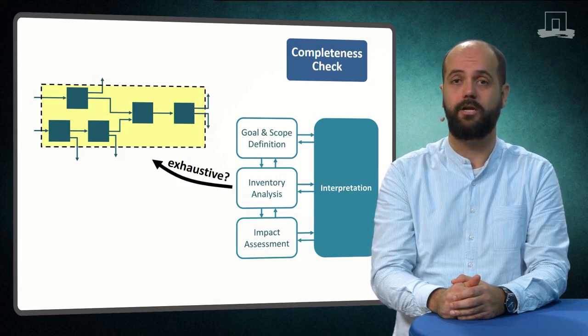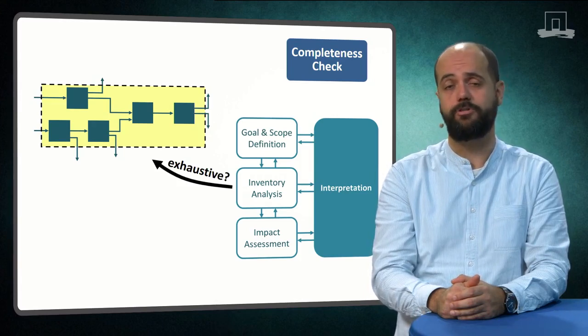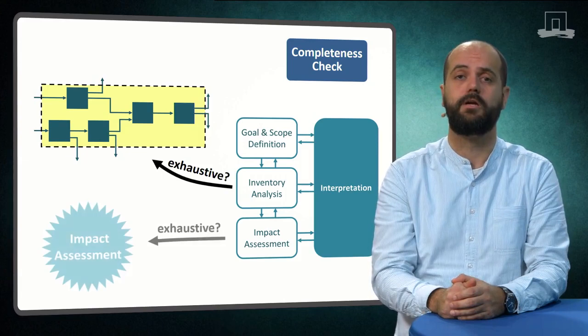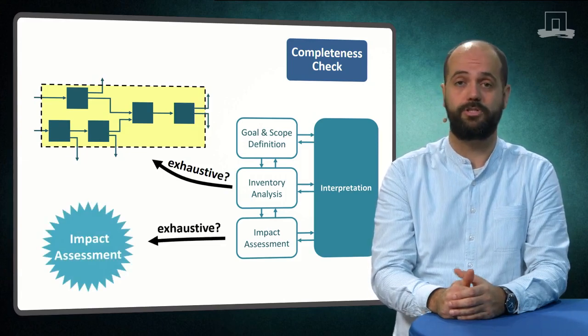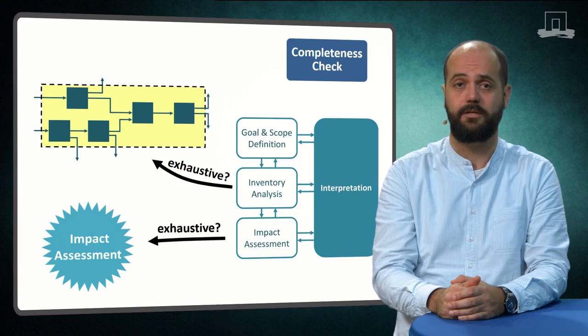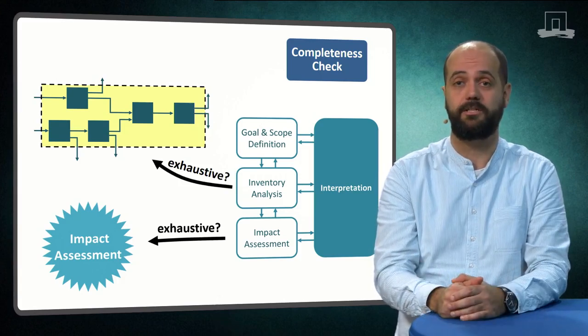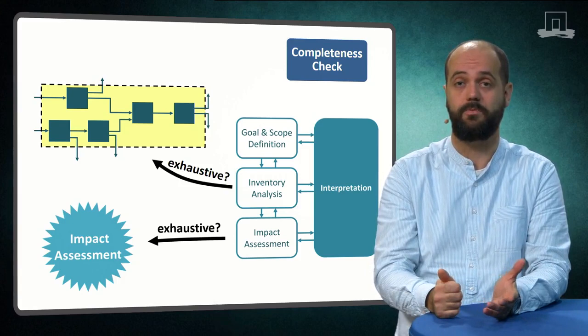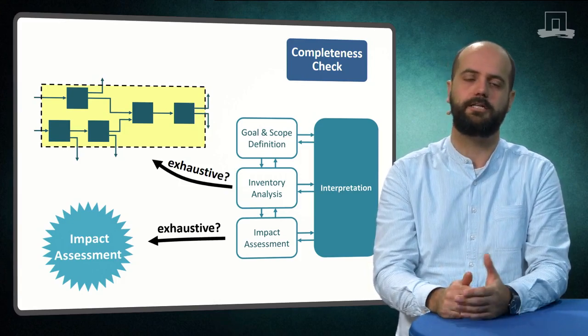We also need to make sure that economic flows that are cut off are followed to the system boundary. If there are emissions or resource extraction values that cannot be characterised because the necessary characterisation factors are missing from the impact assessment method we chose, then this should be made explicit.